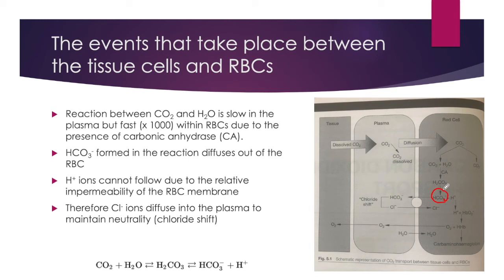However, the red blood cell membrane is relatively impermeable to hydrogen ions. Therefore, chloride ions diffuse into the red blood cell in order to maintain electrical neutrality, and this is known as the chloride shift.